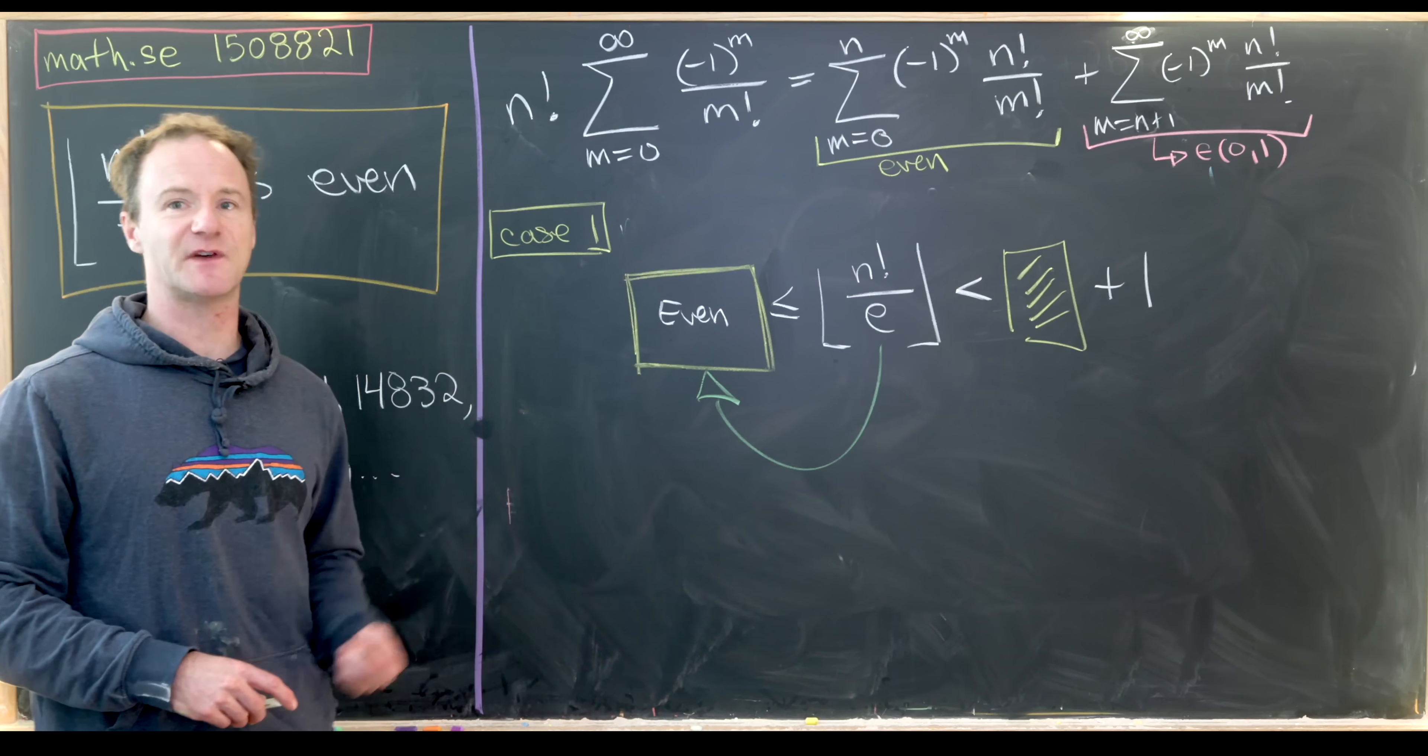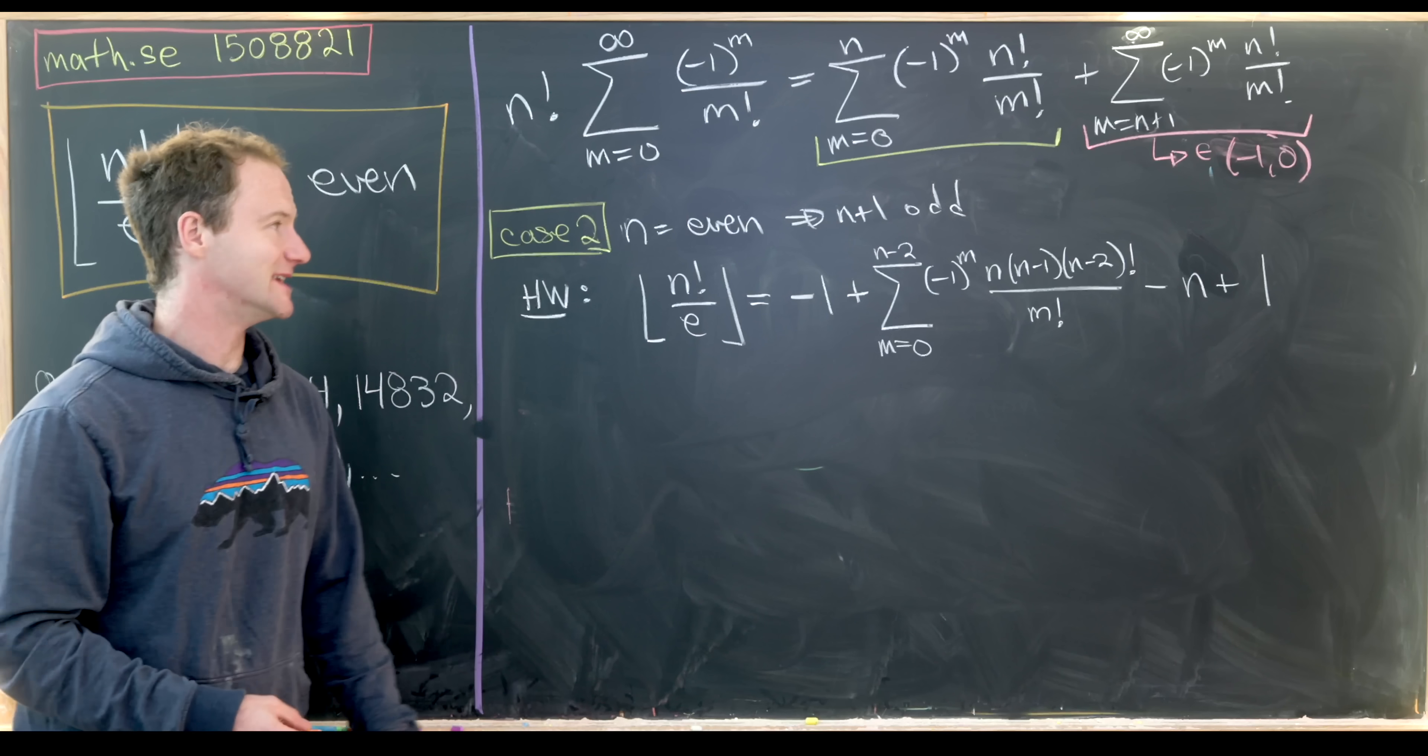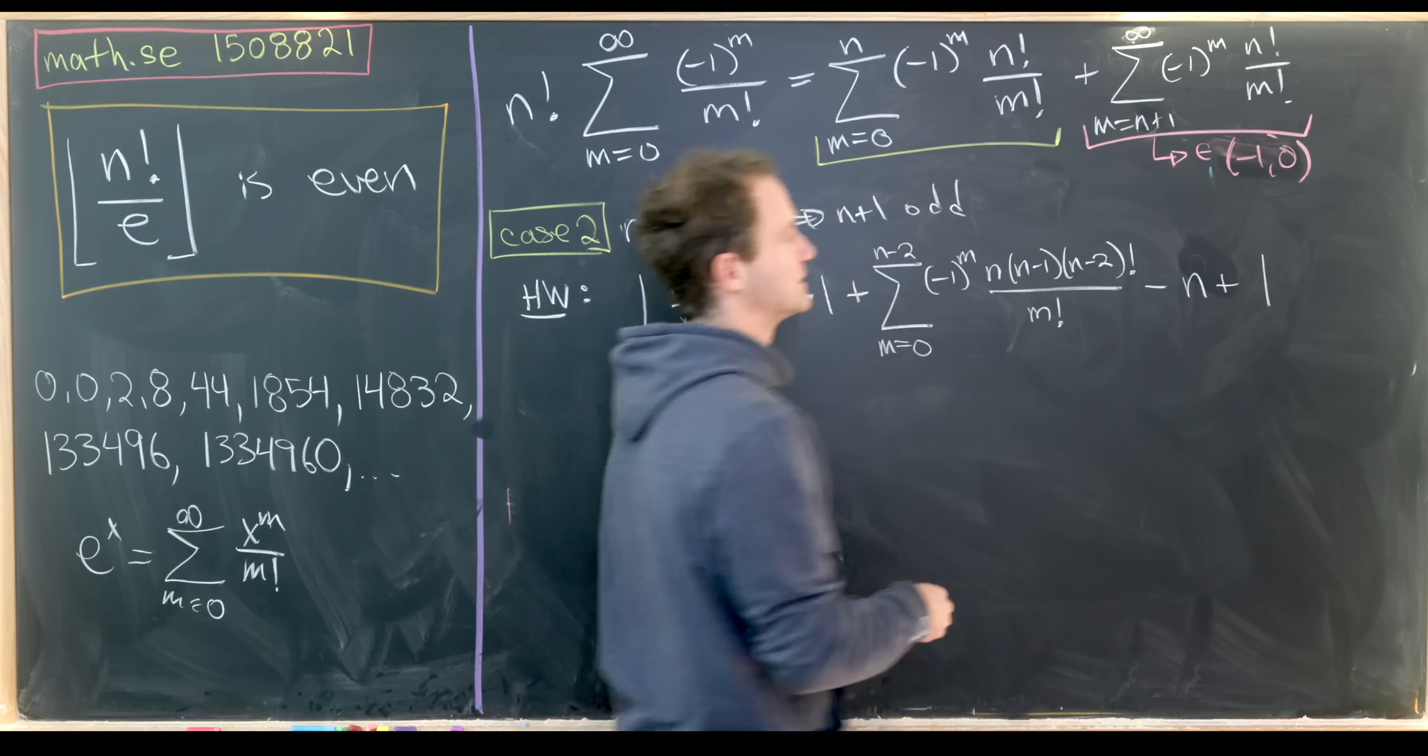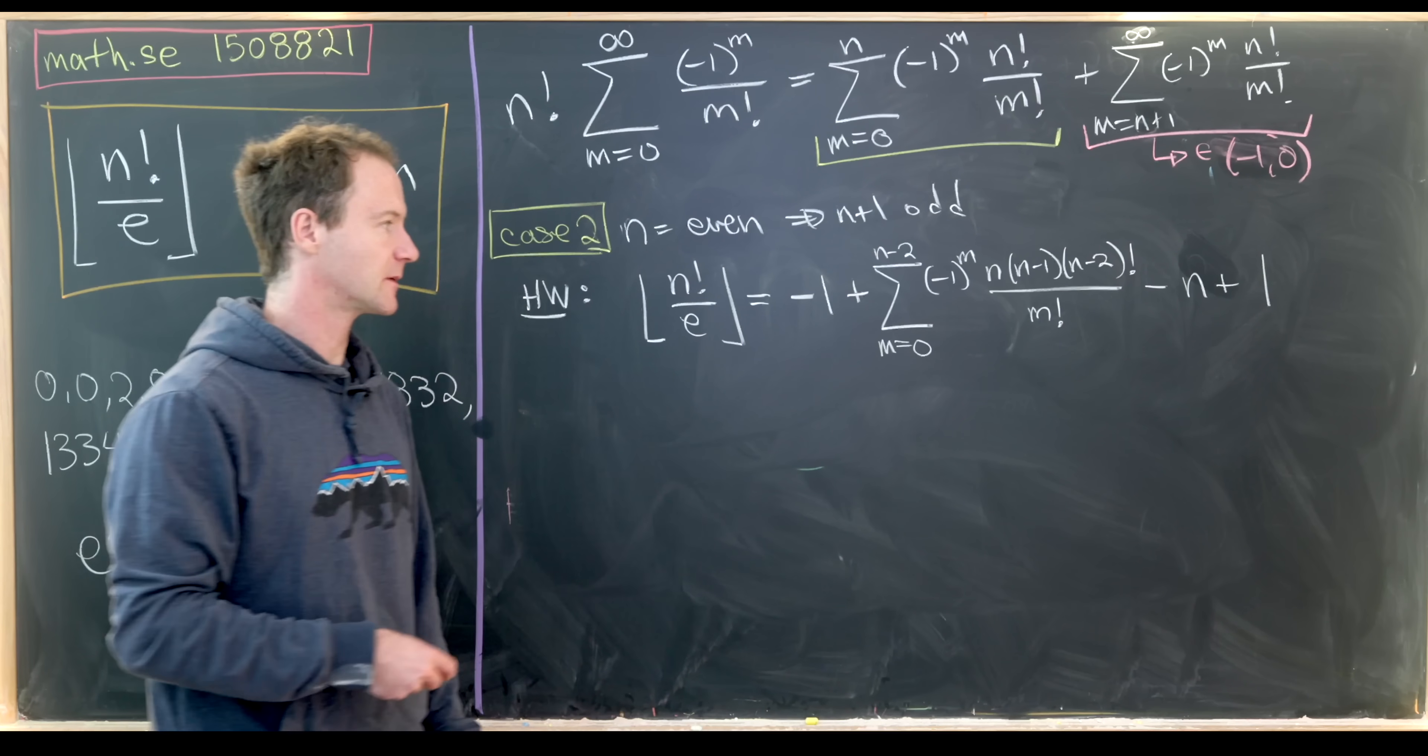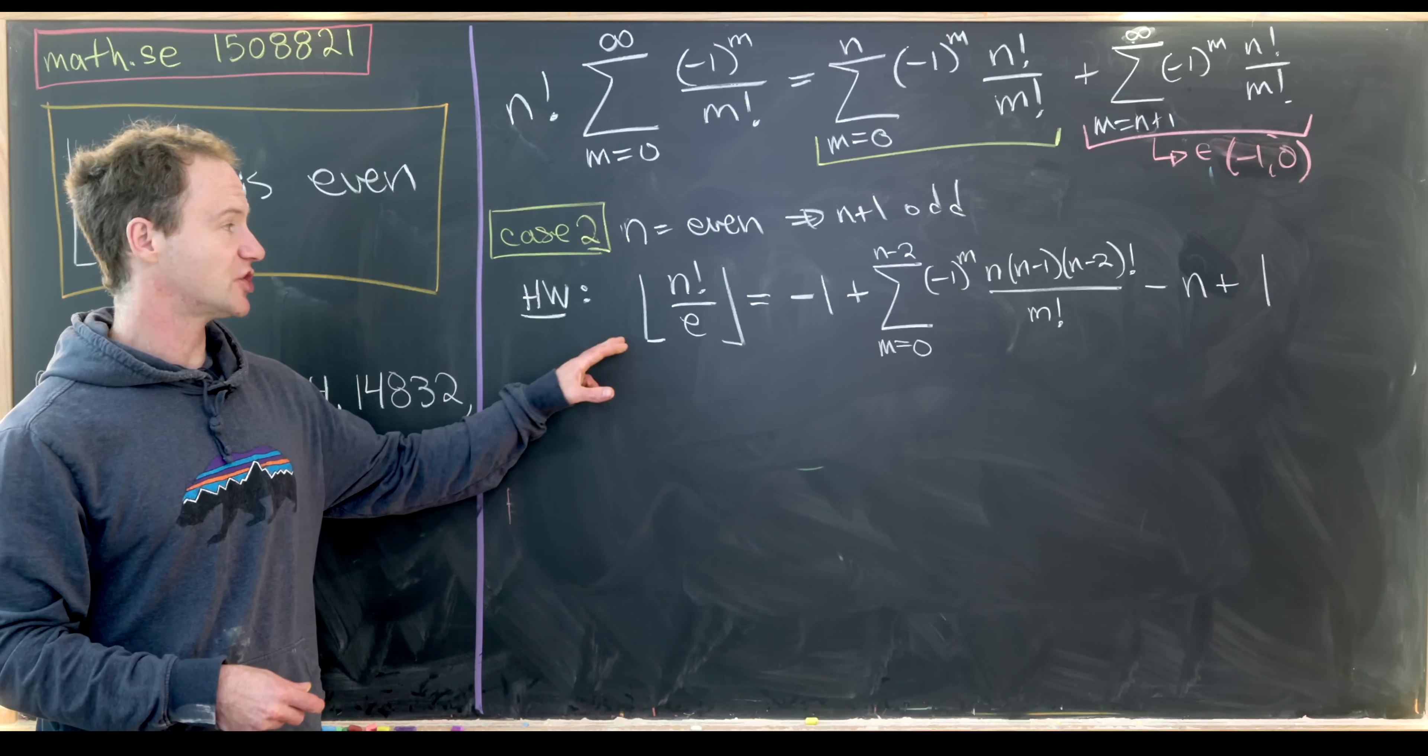The second case is fairly similar so we'll work through that more quickly. Now we're going to look at the second case which is when n is even which means n plus one is odd. Now in this setup our remainder term is between negative one and zero instead of between zero and one, that's because we start with a negative number instead of a positive number.